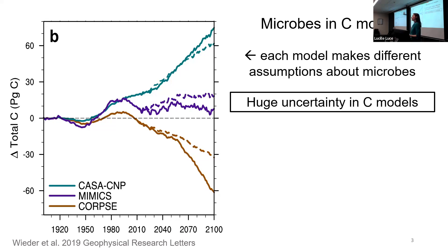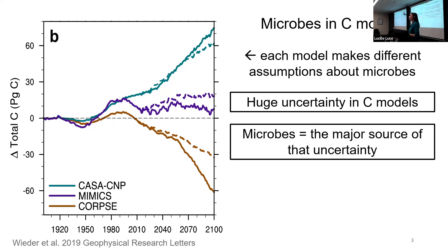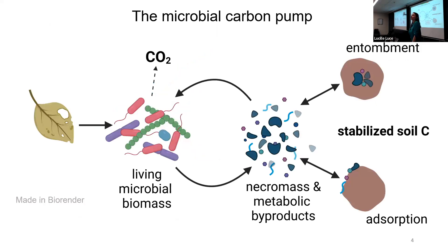There's huge uncertainty in these models, and the real source of that uncertainty is the microorganisms. We need to study these things so that we can parameterize them in our models in a way that helps us predict what's going to happen in the future. Let's look in more detail about how these microorganisms are processing the carbon we see in our soils.